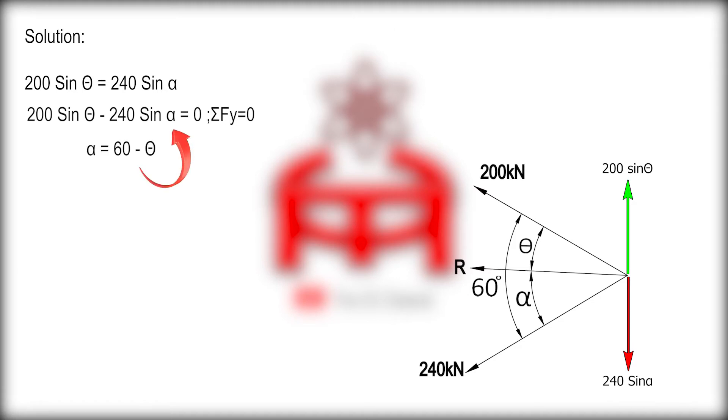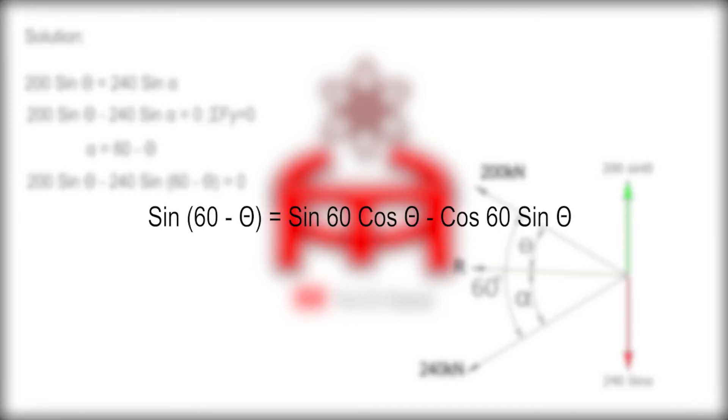Let's substitute alpha in terms of theta. Alpha is equal to 60 minus theta. Let us use the sine two-angle formula: sine of 60 minus theta equals sine 60 cosine theta minus cosine 60 sine theta.